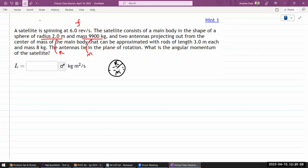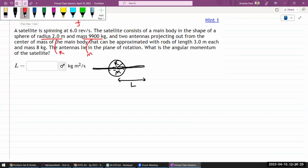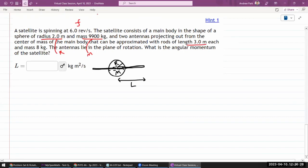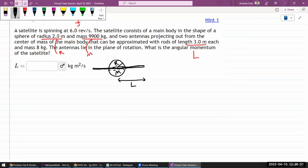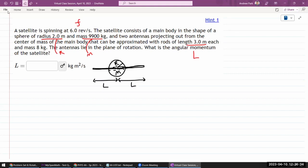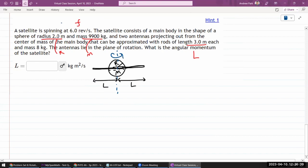They can be approximated with rods of length 3.0 meters each and mass—that's interesting. So I'm going to assume that the antennas overlap within the sphere region as well. It's basically increasing the density of the satellite in the place where they overlap. That's what I'm gonna assume. If somehow I get the wrong answer based on that assumption, I will adjust it and give it a retry. So this is also L. The way it was being described, it's rotating like this. The antennas lie in the plane of rotation. Yeah, okay.